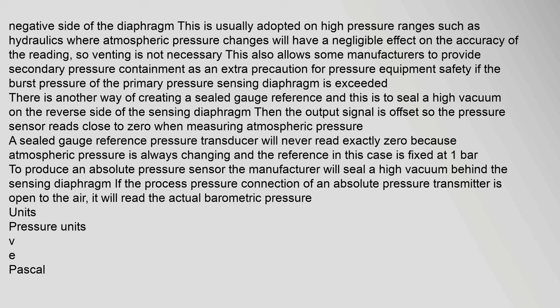The sealed gauge also allows some manufacturers to provide secondary pressure containment as an extra precaution for pressure equipment safety. If the burst pressure of the primary pressure sensing diaphragm is exceeded, another way of creating a sealed gauge reference is to seal a high vacuum on the reverse side of the sensing diaphragm; then the output signal is offset so the pressure sensor reads close to zero when measuring atmospheric pressure. A sealed gauge reference pressure transducer will never read exactly zero because atmospheric pressure is always changing, and the reference in this case is fixed at one bar. To produce an absolute pressure sensor, the manufacturer will seal a high vacuum behind the sensing diaphragm; if the process pressure connection is open to the air, it will read the actual barometric pressure.